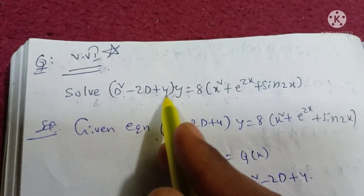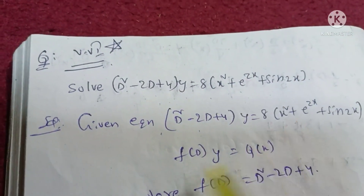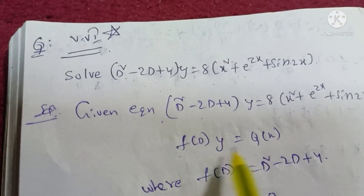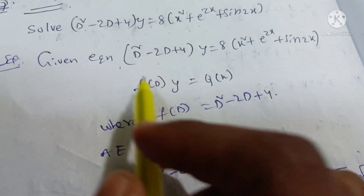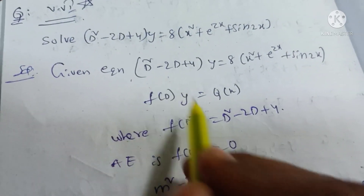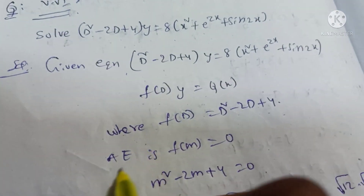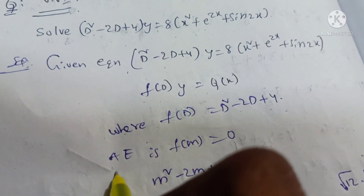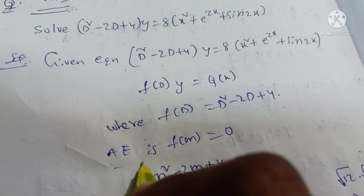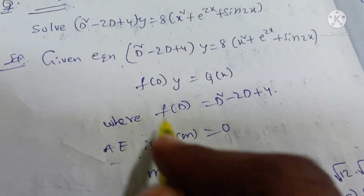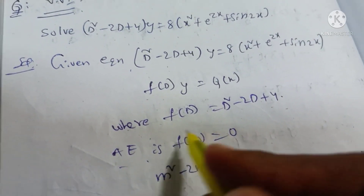Given the equation f of d of y is equal to Q of x, where f of d is equal to d squared minus 2d plus 4. The auxiliary equation is f of m is equal to 0.